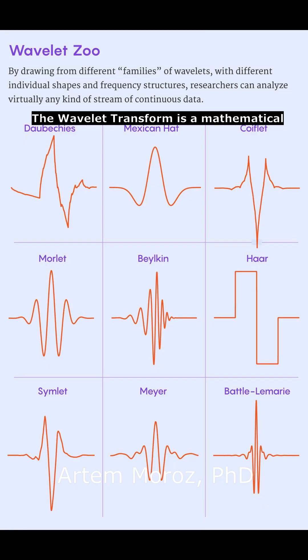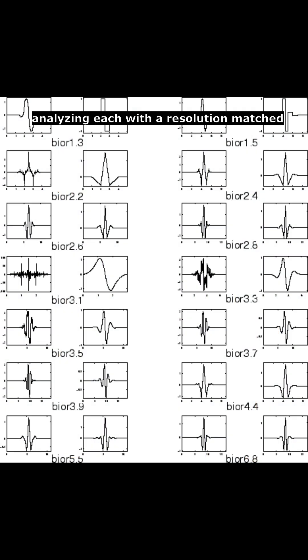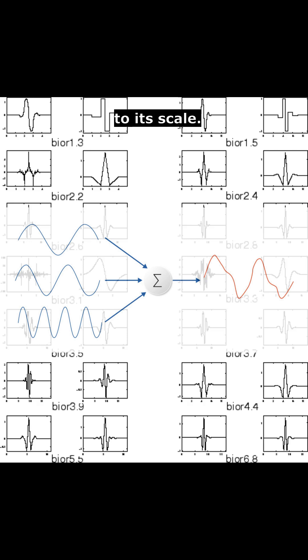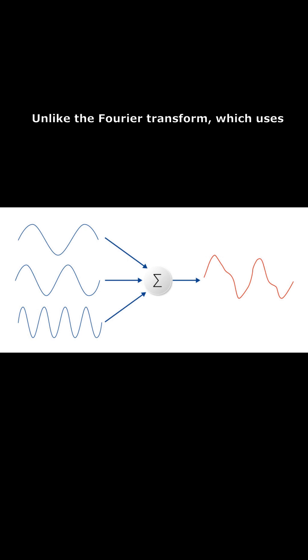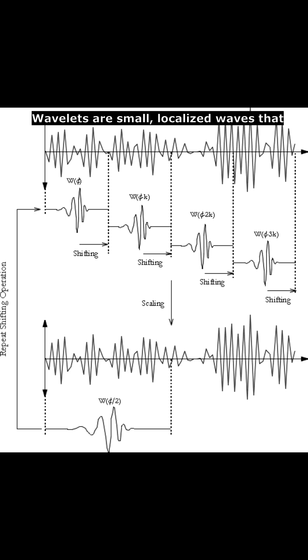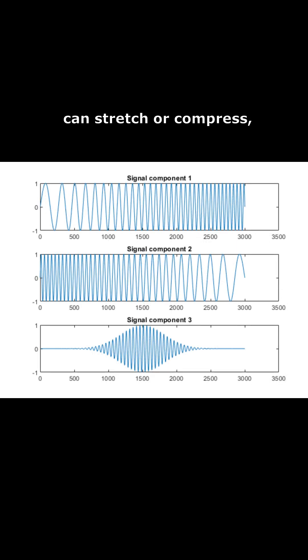The wavelet transform is a mathematical tool that breaks signals into different wave components, analyzing each with a resolution matched to its scale. Unlike the Fourier transform, which uses infinite sine and cosine waves, wavelets are small, localized waves that can stretch or compress.